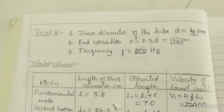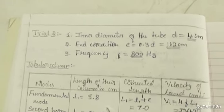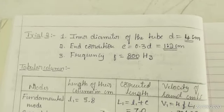Repeat same steps for another value of frequency. First, inner diameter of the tube is noted. It is 4 centimeters.